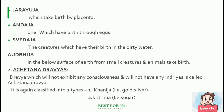Achetana Dravya — a Dravya which does not exhibit any consciousness and does not have any Indriyas is called Achetana Dravya. It is classified into two types: Khanija and Kritrima.